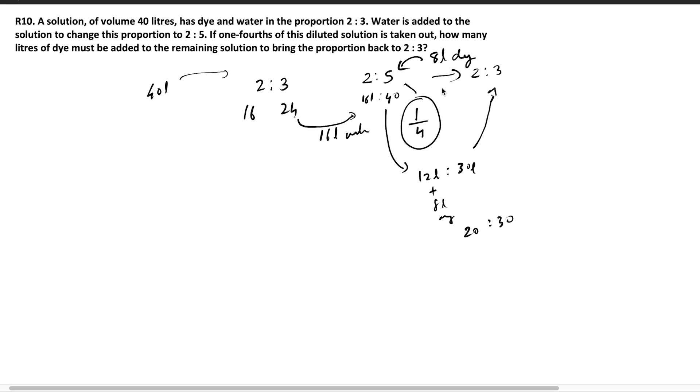I hope you understood the solution. All I did in the question was take the first volume which was 40 liters and then I followed the directions as it was given in the question. In the beginning it said that dye and water is in the proportion of 2 is to 3. So I found out that it was 16 liters of dye and 24 liters of water. Then water was added to it and the proportion changed to 2 is to 5, which means I had to add 16 liters of water and make it 40. So you will get 2 is to 5. 16 is to 40 is 2 is to 5.